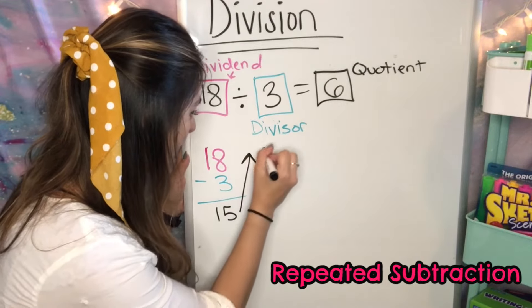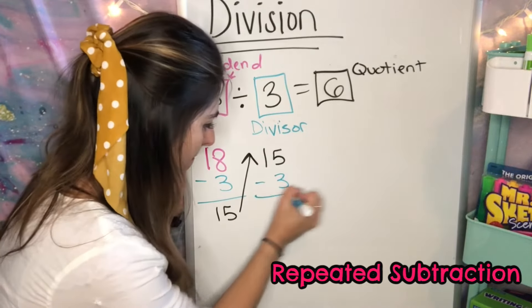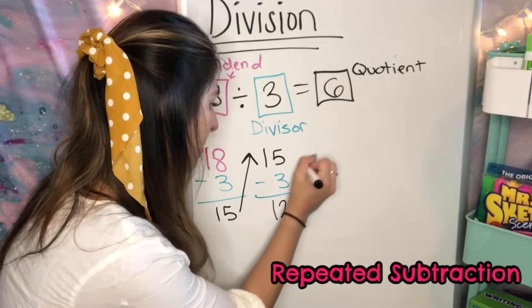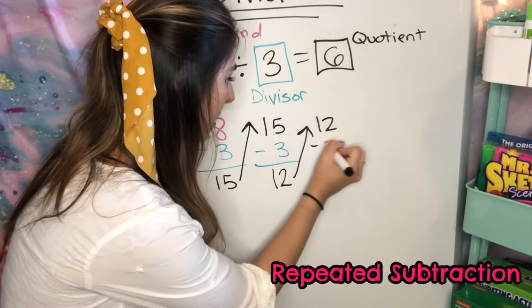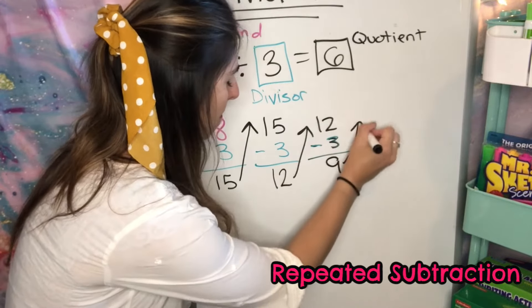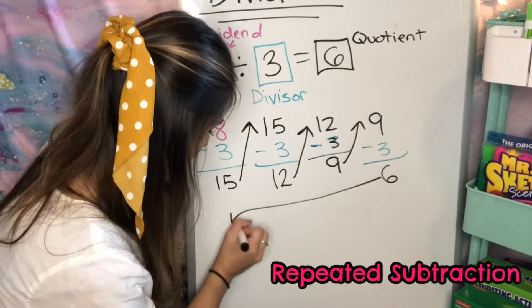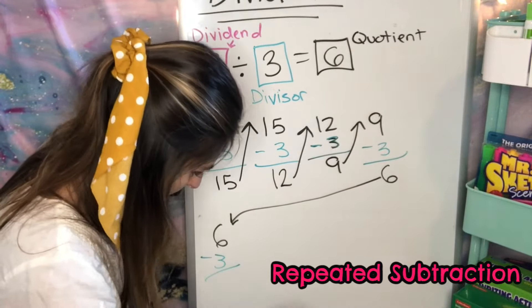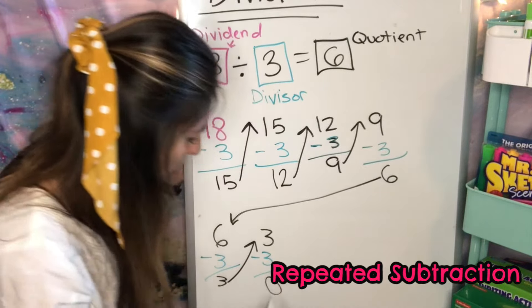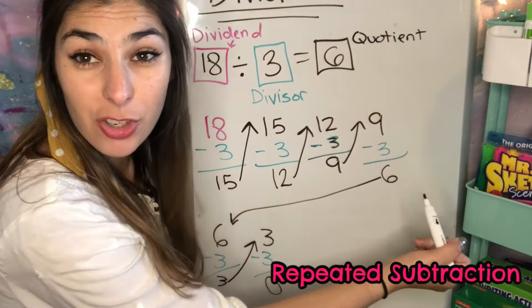I'm going to take that 15 up, 15 take away 3, 12. Take 12 up, take away 3, 9. Take away 3, equals 6. 6, take away 3 equals 3. 3 take away 3 equals 0. Once I reach 0, then I'm going to count how many equations I did.